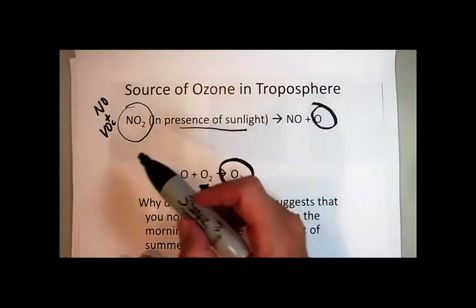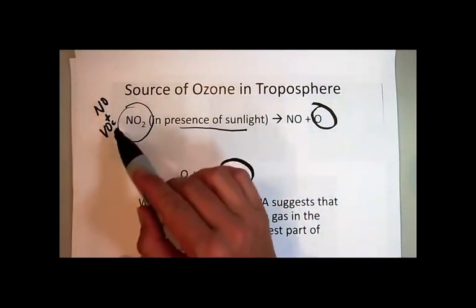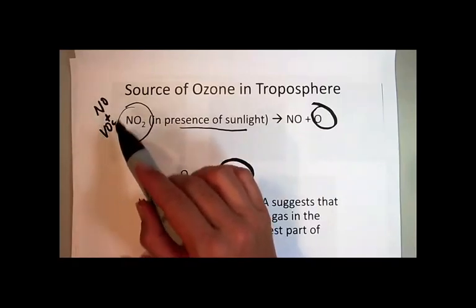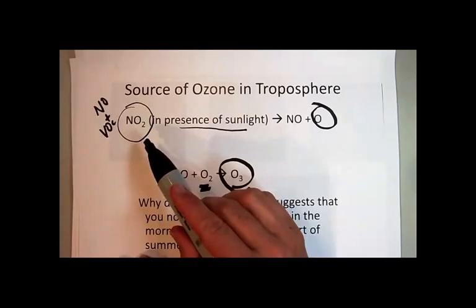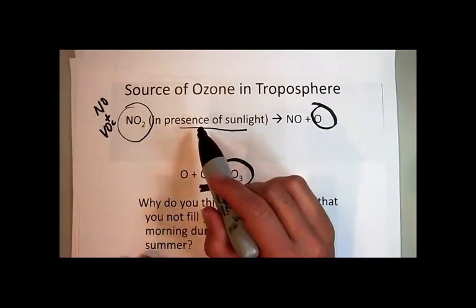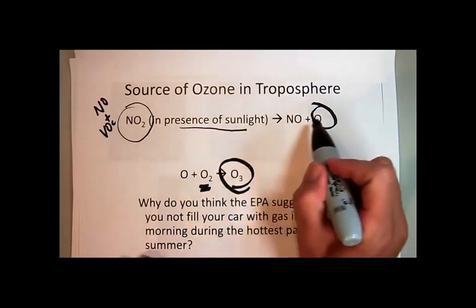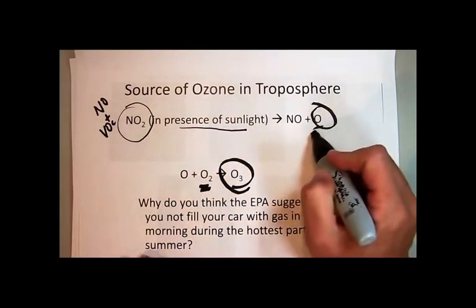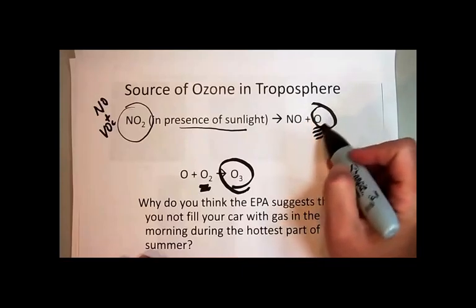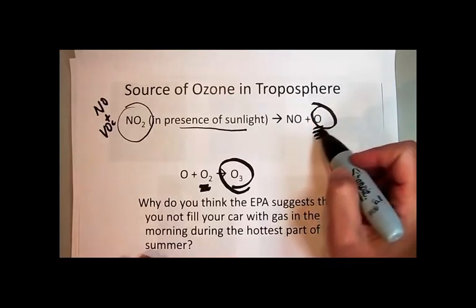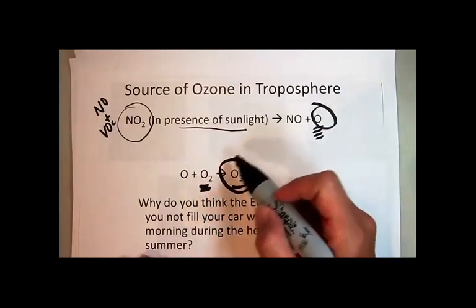So the problem is that you've got the nitrogen oxide and the VOCs coming from cars. People are driving all the time — there's a lot of people driving in the morning going to work. In the presence of sunlight, the NO2 will be broken down to NO and O, giving us this very, very reactive oxygen atom. Within nanoseconds, it's going to react almost as soon as it's produced with oxygen to form ozone.